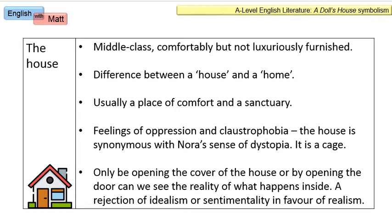However, in this play, from Nora's perspective, this is a home which has oppression and claustrophobia in it, because it's a house synonymous with Nora's own sense of dystopia. That house is a cage for her. And that's why when you see posters advertising this play being performed, they will often choose the motif of the bird in the cage to represent that symbolically.